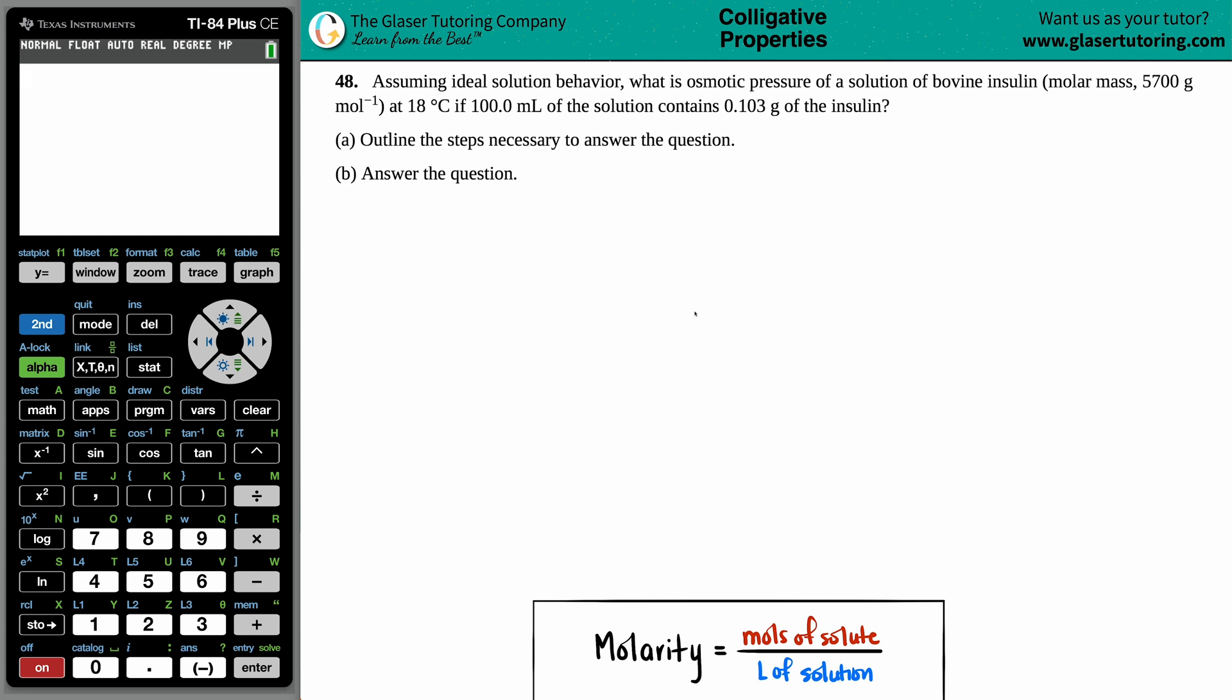Number 48. Assuming ideal solution behavior, what is the osmotic pressure of a solution of bovine insulin, which has a molar mass of 5,700 grams per mole at 18 degrees Celsius if 100.0 mils of the solution contains 0.103 grams of the insulin?